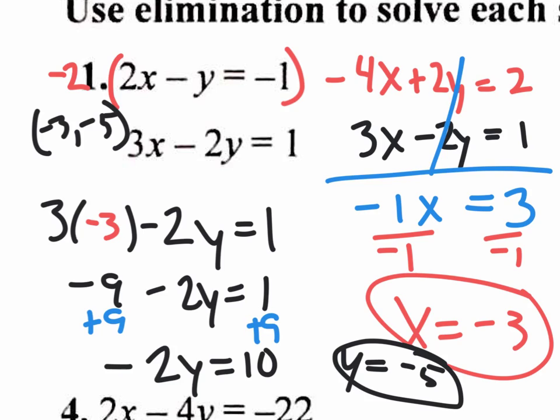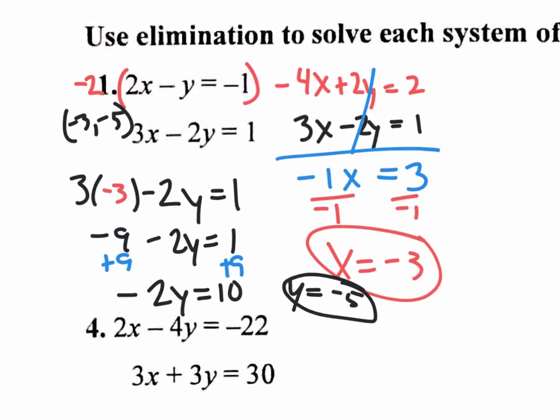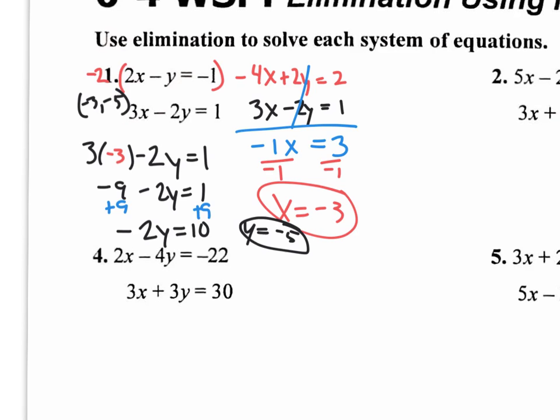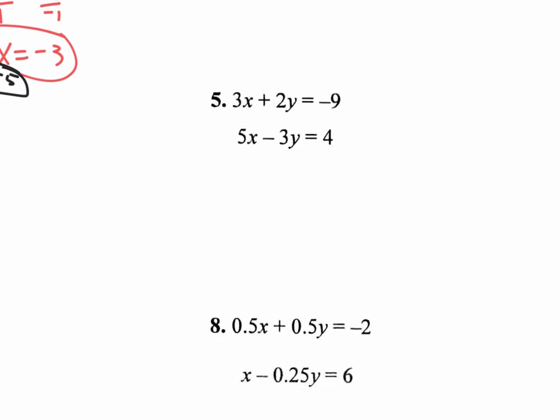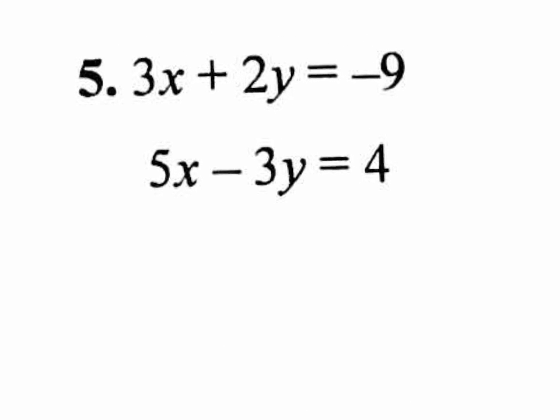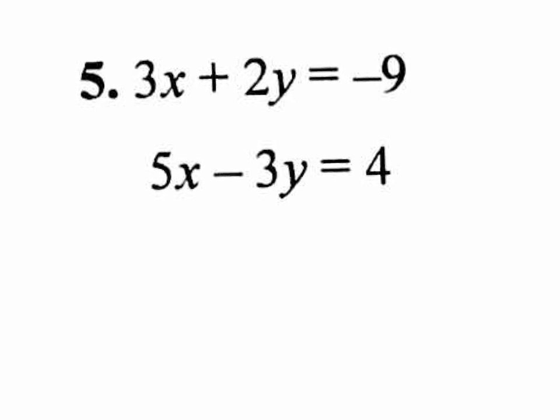Now, this one was fairly easy because we were able to just change one equation and get something to cancel. Sometimes, you're going to be forced to change both equations. For example, number 5, if you wanted to cancel out X's, you'd have to change this to become a positive 15. And this would have to change and become a negative 15.